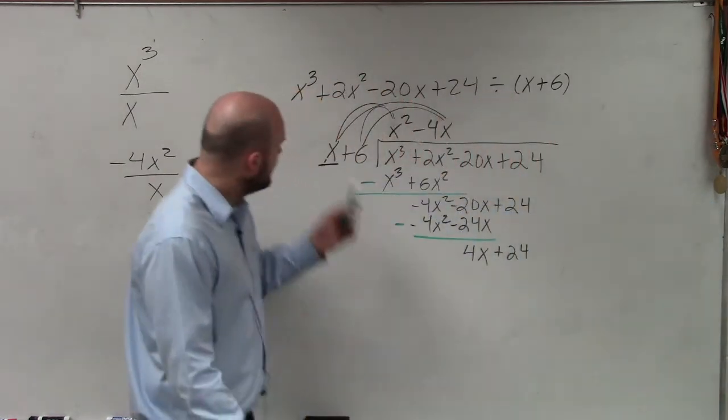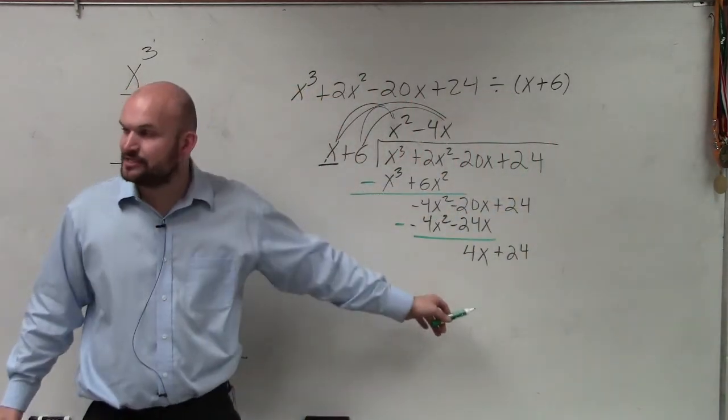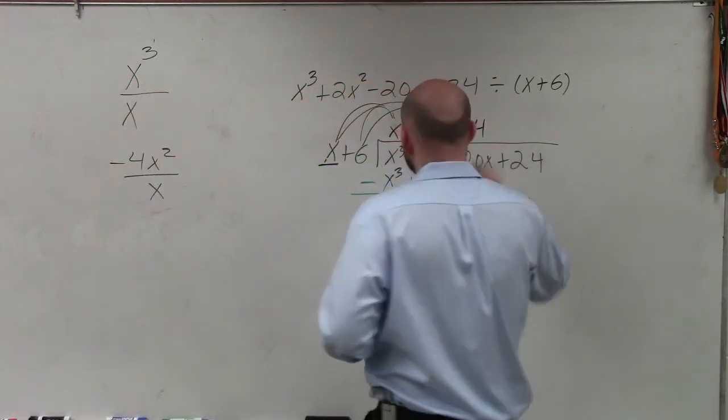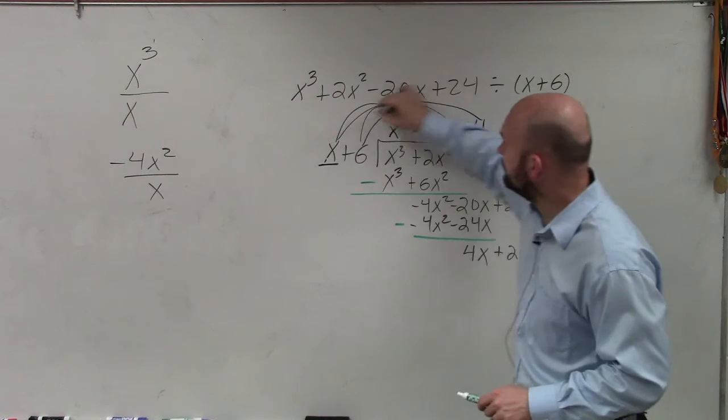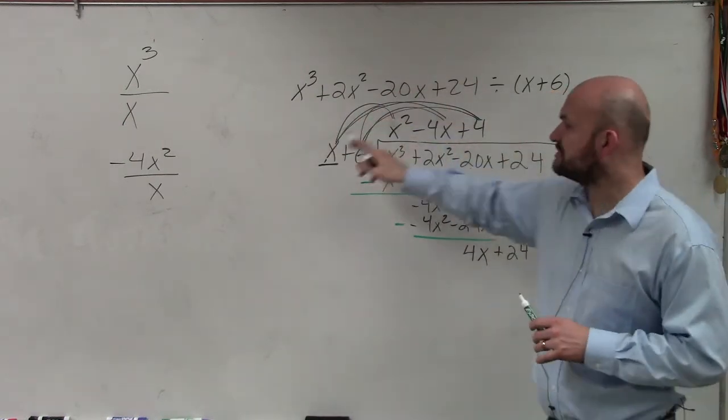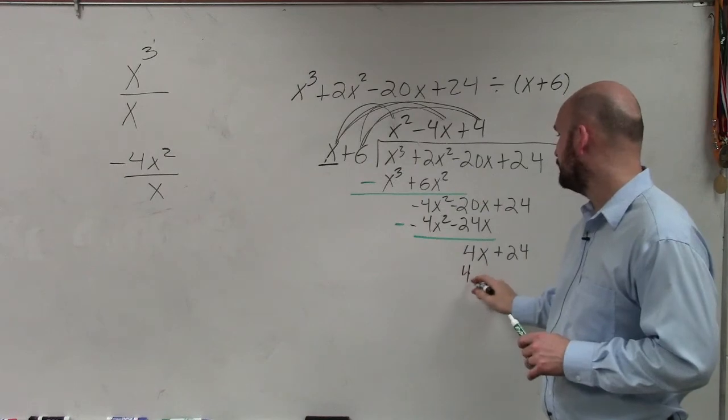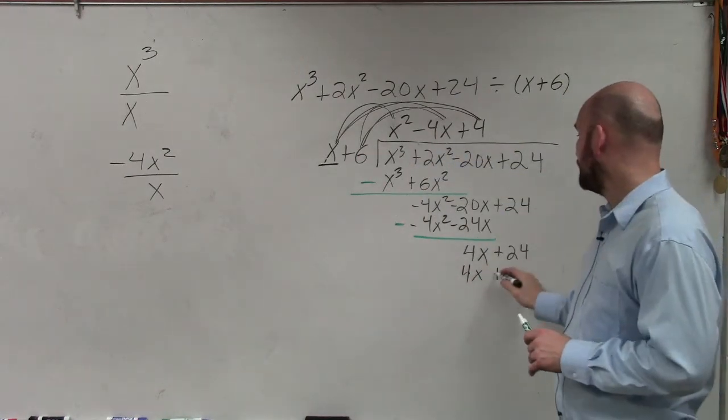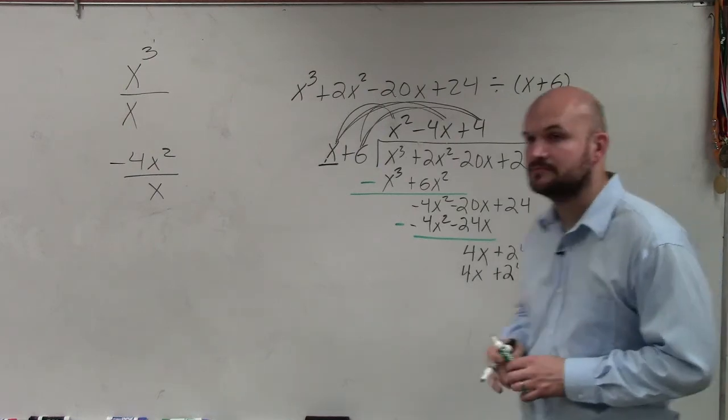Now, again, we apply the same operation. I take x and I divide it into 4x. x divides into 4x a positive 4 times. And you multiply 4 times x and 4 times 6. 4 times x gives you 4x. 4 times 6 gives you 24.